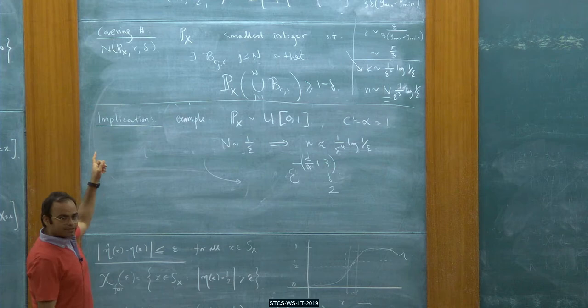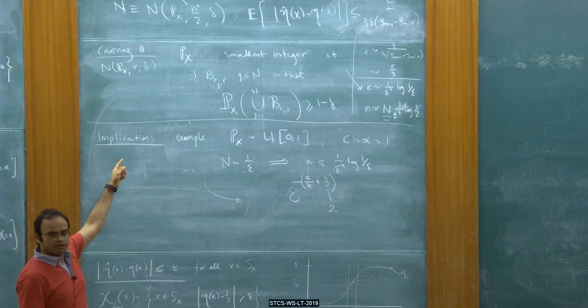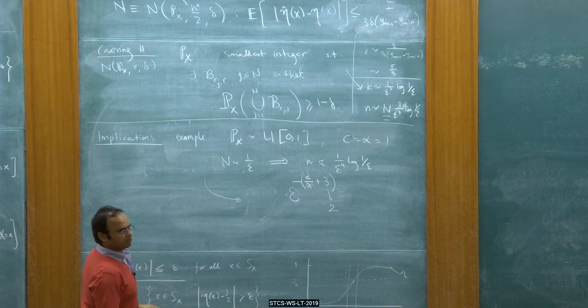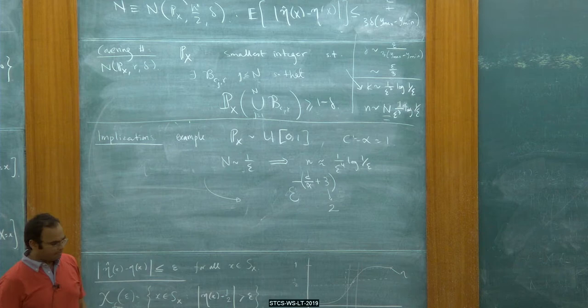If I knew that my probability measure had a really nice structure like strong density, then you can change your argument a little bit and get rid of that plus 1. That plus 1 is coming because you're not assuming anything about the probability distribution — that's where the plus 1 comes from.